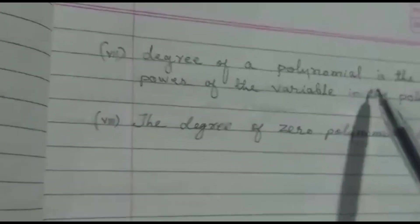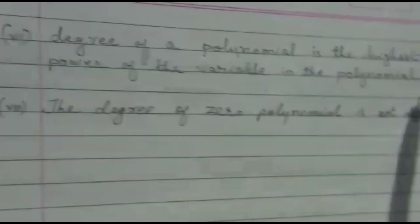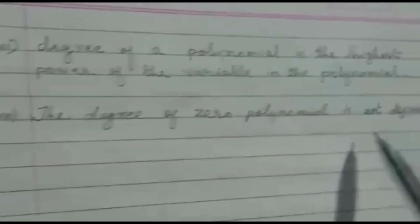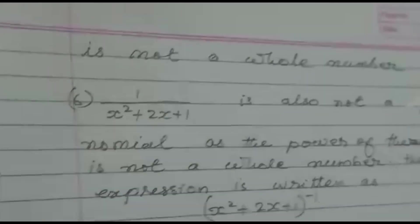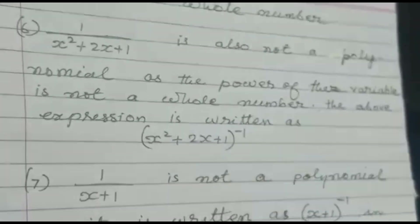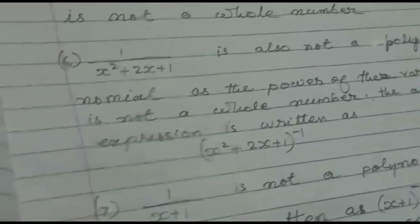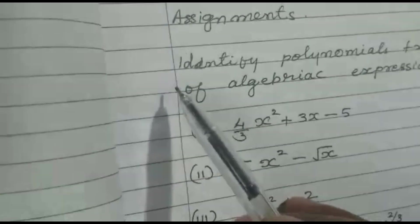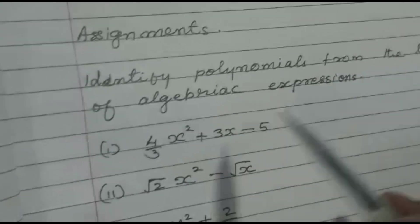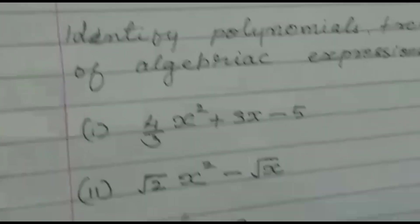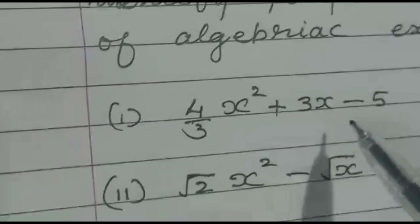The degree of a polynomial is the highest power of the variable in the polynomial. An important point: the degree of the zero polynomial is not defined. Now let us come to some assignments. Hoping that you understood this topic — which we studied in Class 9 as a revision — you may try these assignments. The question is: identify the polynomials from the following list of algebraic expressions.